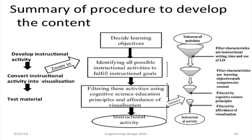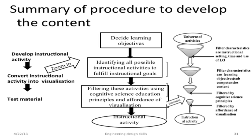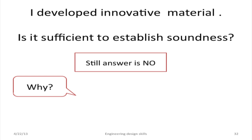Now summarizing my process: I developed instructional material, then converted it into visualization. I identified all the instructional activities which can address the learning objectives. I filtered these activities using cognitive science principles as well as the affordance of visualization, and then I developed the instructional activity. Now I have developed innovative material — but can I publish a paper? Still it is incomplete. I have not established soundness of my process because I have developed the instructional activity and converted it to visualization, but I have not tested my material yet. So I cannot claim that my material is working.